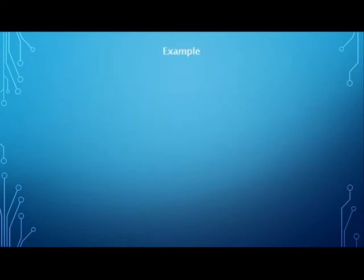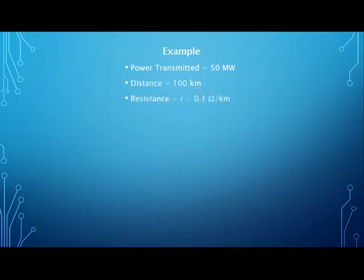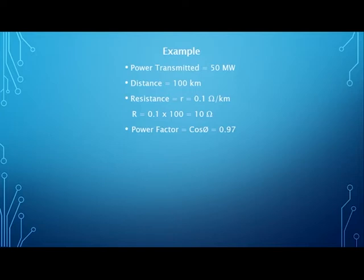We will explain this with a simple example. We want to transmit electric power of 50 megawatts across a distance of 100 kilometers, and the resistance per kilometer is 0.1 ohm, so the overall resistance of the transmission line will be 10 ohm. The power factor of the transmission line is 0.97 — transmission lines normally have a higher power factor compared to distribution systems. We will consider two cases.